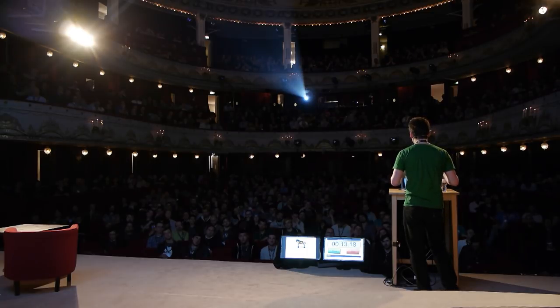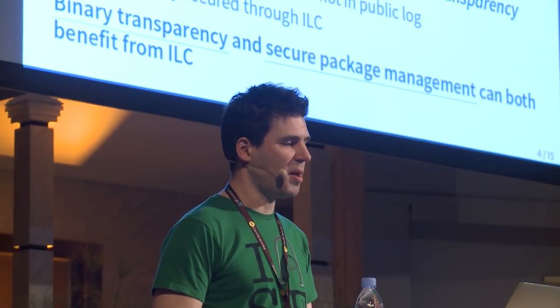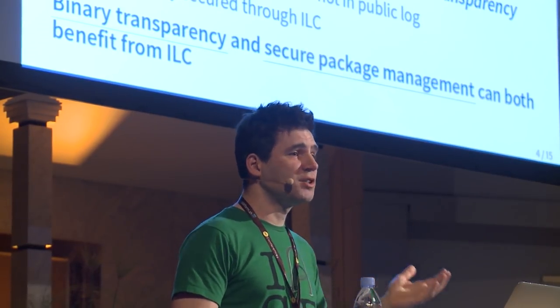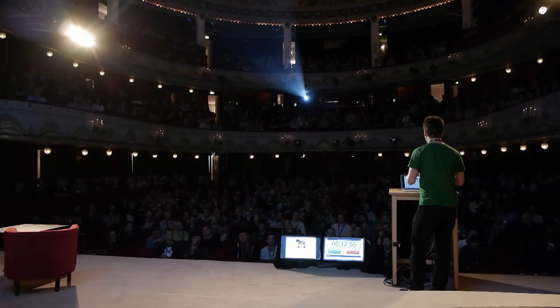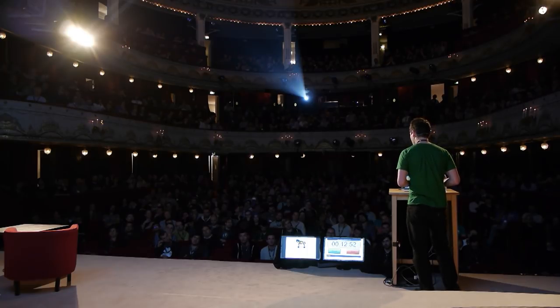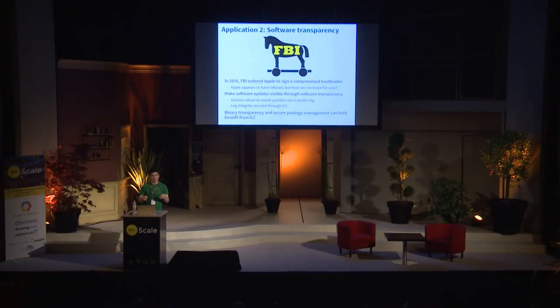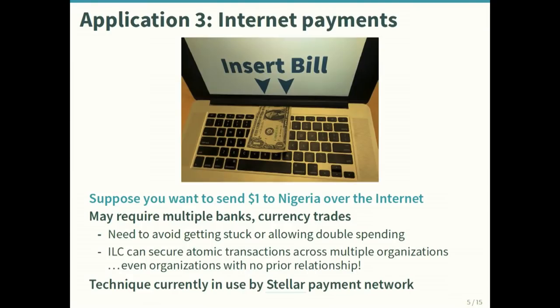With internet-level consensus, these logs could be much more secure — instead of trusting one organization to maintain a software transparency log, the whole world could agree on all published software. This generalizes to other forms of software transparency: Mozilla is looking into binary transparency to ensure the Firefox version you install is the one everyone's installing; there's work at UCSD on secure package management to secure packages with dependencies and even revoke software when a vulnerability is discovered.